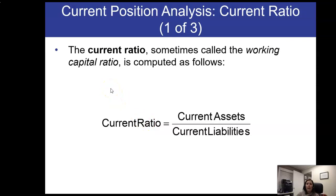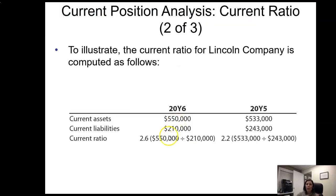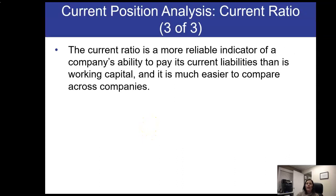The current ratio is another way to measure working capital, often called the working capital ratio. It is current assets divided by current liabilities. Using the same numbers, we get a current ratio of 2.6 versus 2.2 the prior year. The higher the current ratio, the more current assets we have over current liabilities, meaning we're in a better position to use our current assets to pay our current debt. Because it's a ratio, it's easier to compare across companies than using the dollar amount of working capital.